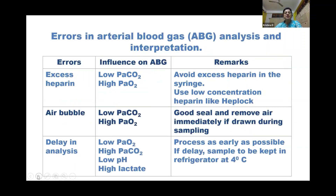There may be some errors in arterial blood gas analysis and interpretation. There may be excess heparin in the sample or air bubbles, which will result in low CO2 and high oxygen values. Always expel excess heparin from the syringe, ensure a good seal, and remove air immediately during sampling. Do not delay analysis — process as early as possible. If delayed, keep the sample in the refrigerator at 4°C.